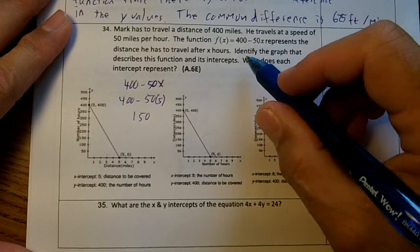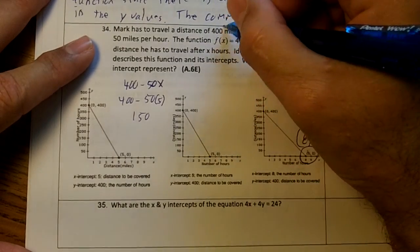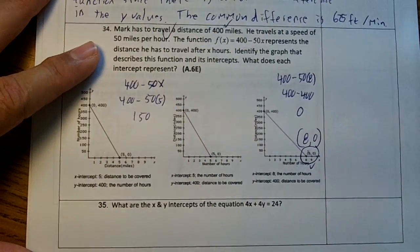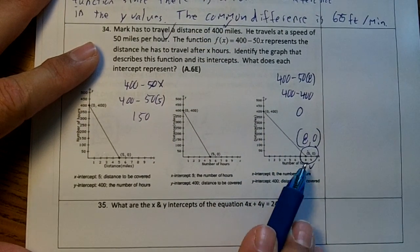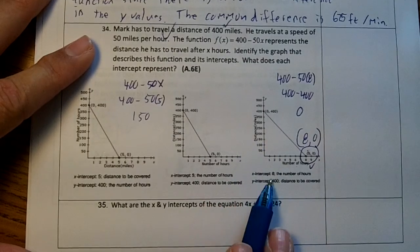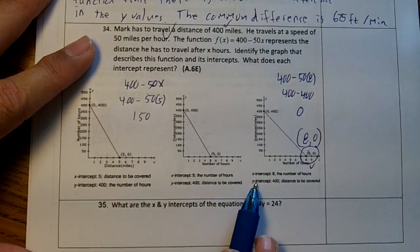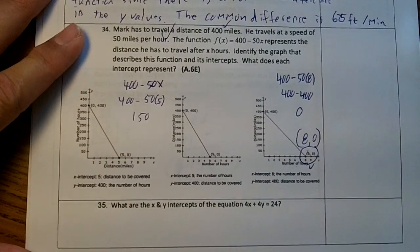Over here, we want distance in miles, which checks. And down here, we want distance in hours, or the hours, which checks also. So our slope would be miles per hour. So this one right here works, doesn't it? The x-intercept is 8, the number of hours it takes to finish. The y-intercept is 400, which is the distance to be covered.